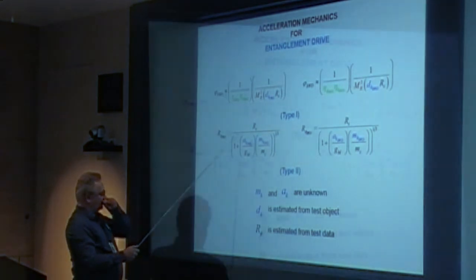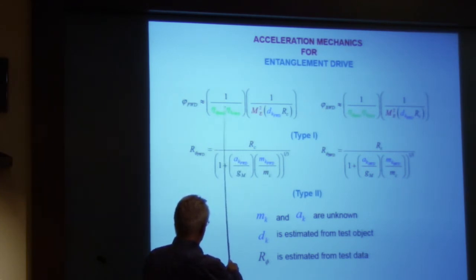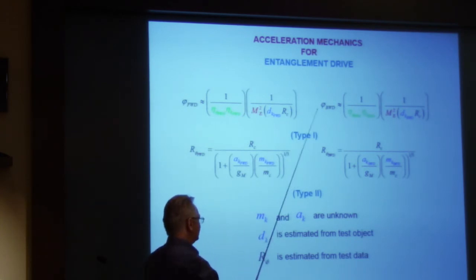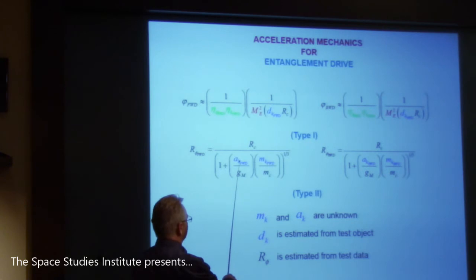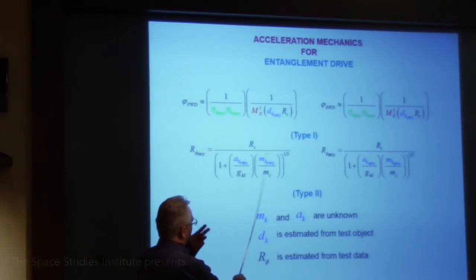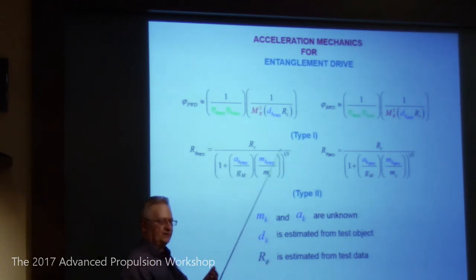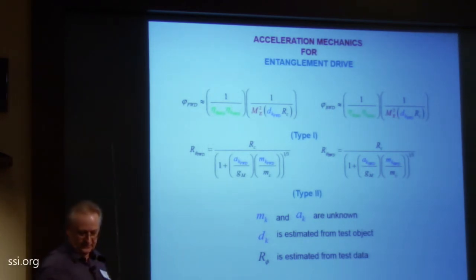I've color-coded these because you have two types of systems. Type one is where you know the acceleration of your mass going backwards and forwards and you know what the mass is. Type two systems have unknowns — you have to guess what they are from your data. The Mach effect thruster is actually a type two system, and that's what I did with the Mach effect thruster, as I'll show you.